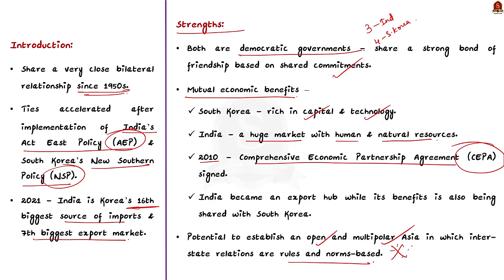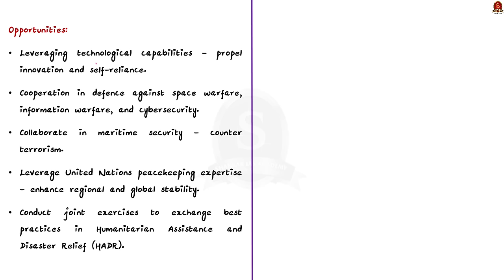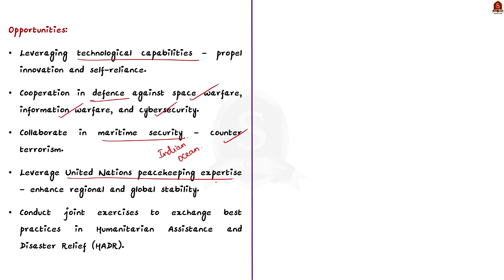Moving on to opportunities: first, technological capabilities — India and South Korea are aiming to collaborate in developing advanced defense systems and equipment. Both countries are also exploring cooperation in defense against space warfare, information warfare, and cyber security. Both countries have significant maritime interests in the Indian Ocean, creating opportunities for maritime security collaboration including joint patrolling and information sharing, which can strengthen counter-terrorism efforts. Both countries can also leverage their UN peacekeeping expertise and conduct joint exercises for humanitarian assistance and disaster relief.